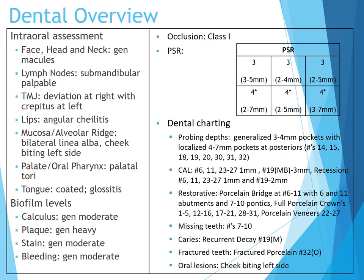This patient has had a porcelain bridge placed at number 6 through 11, with 6 and 11 being abutments and 7 through 10 being pontics. Full porcelain crowns have been placed on 1 through 5, 12 through 16, 17 through 21, and 28 through 31, with porcelain veneers from 22 to 27. He has missing teeth 7 through 10. Radiographically, we can see recurrent decay at number 19 mesial, fractured porcelain at crown 32 occlusal, and cheek biting present on the left side.